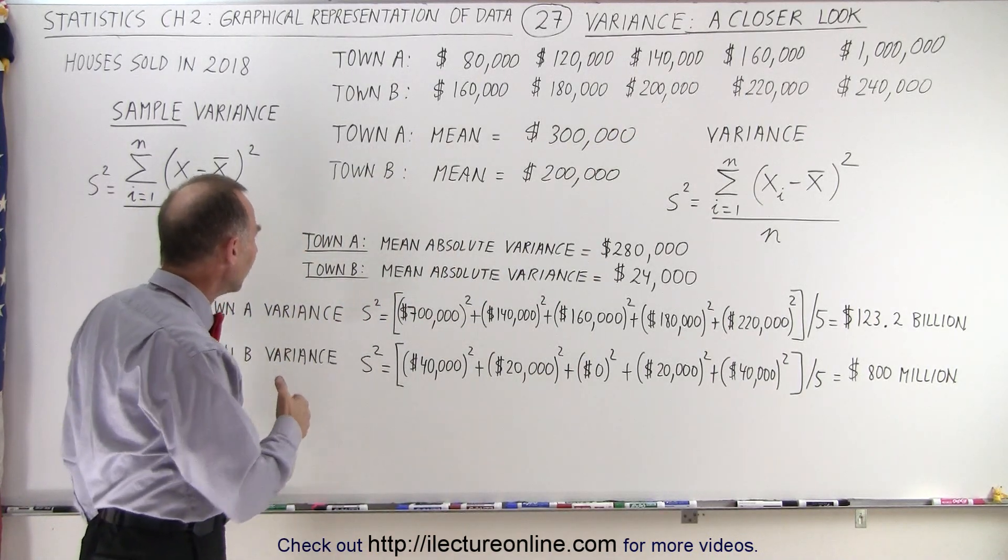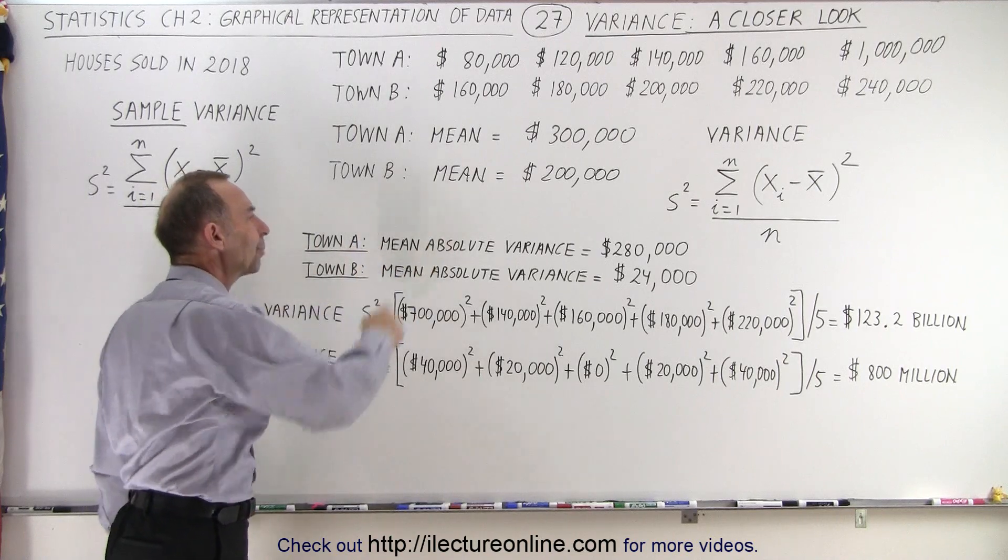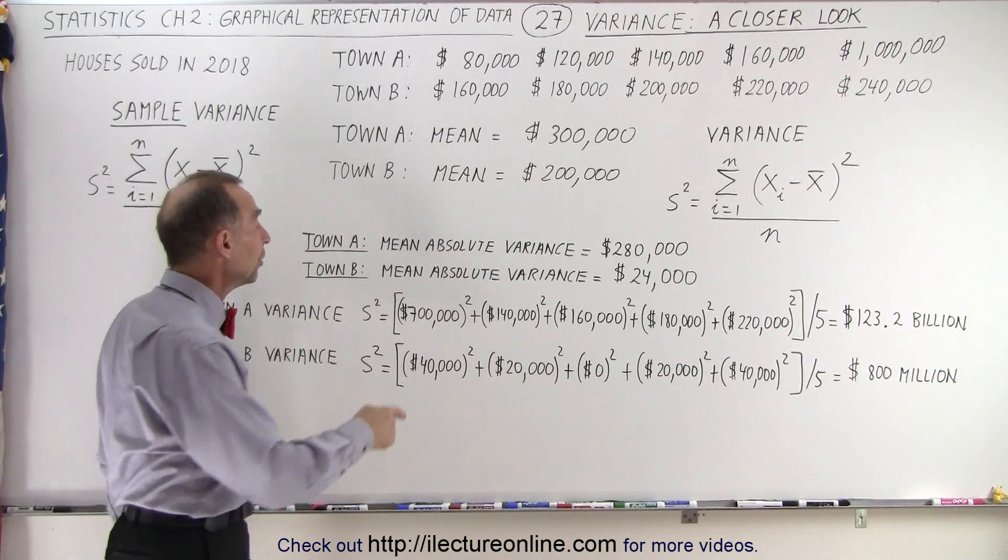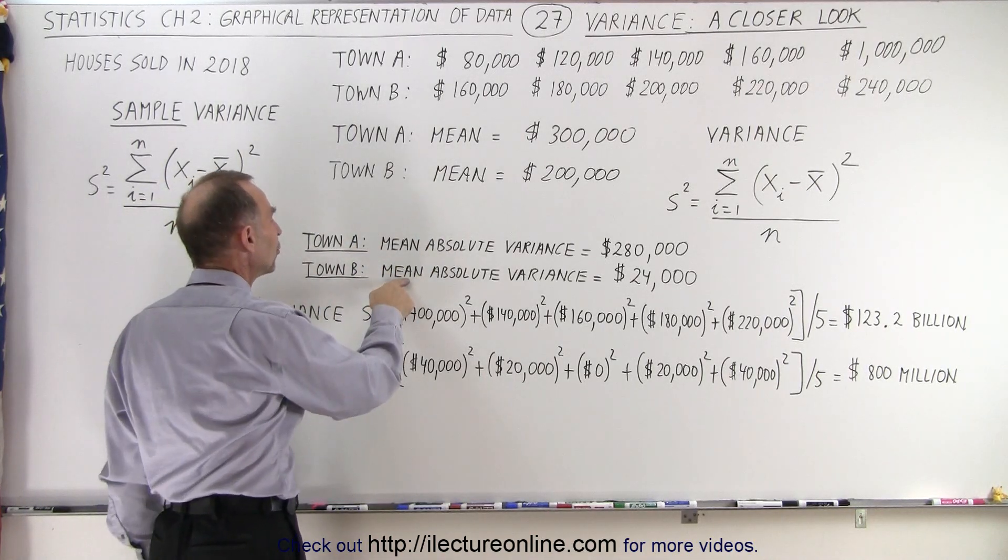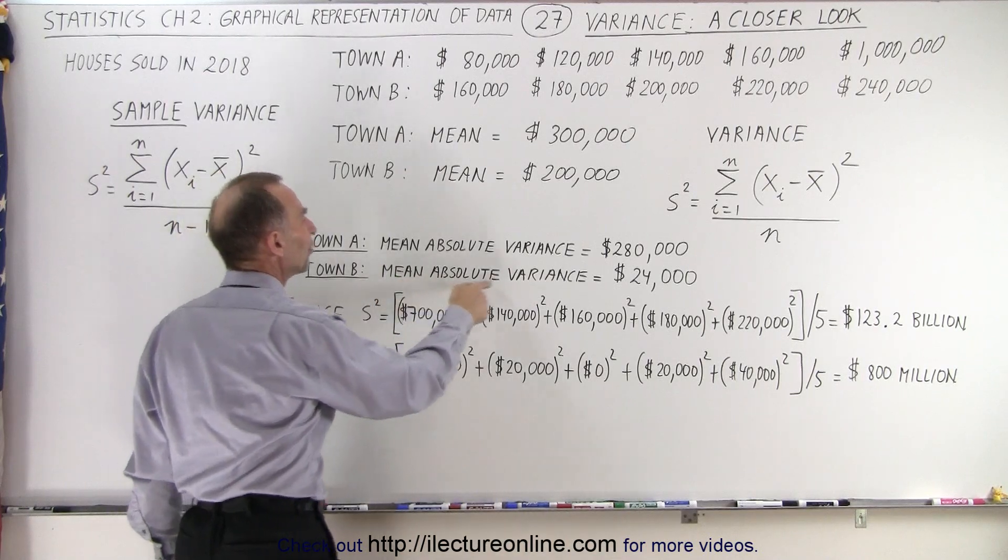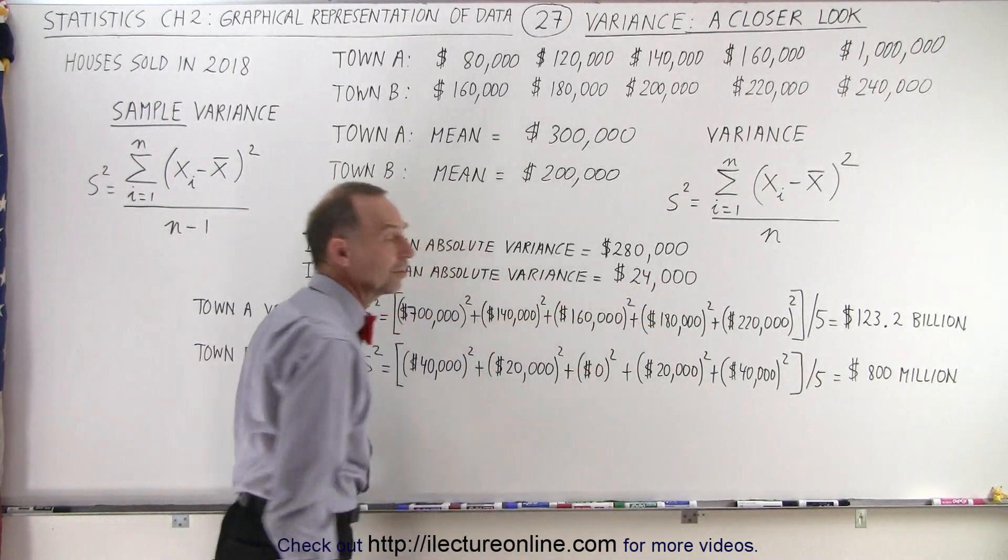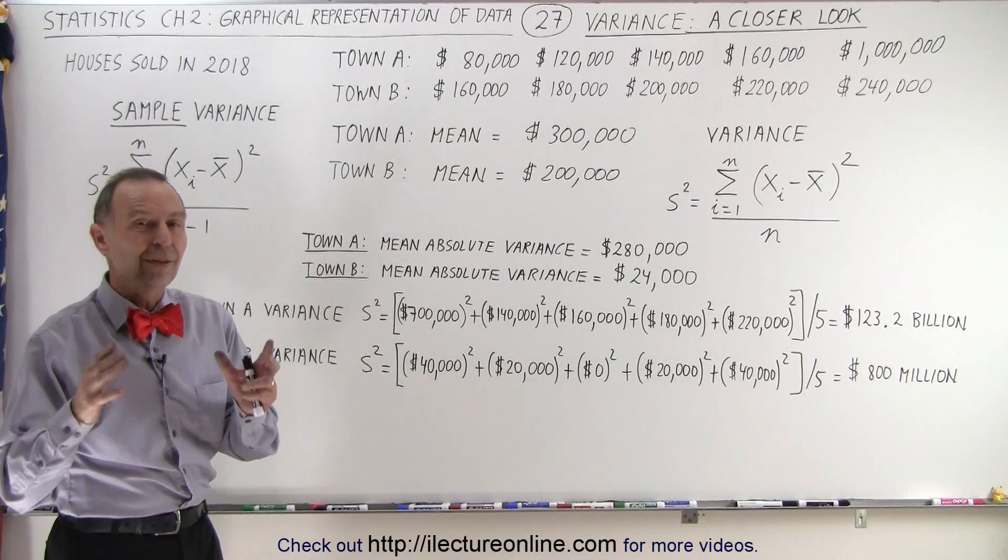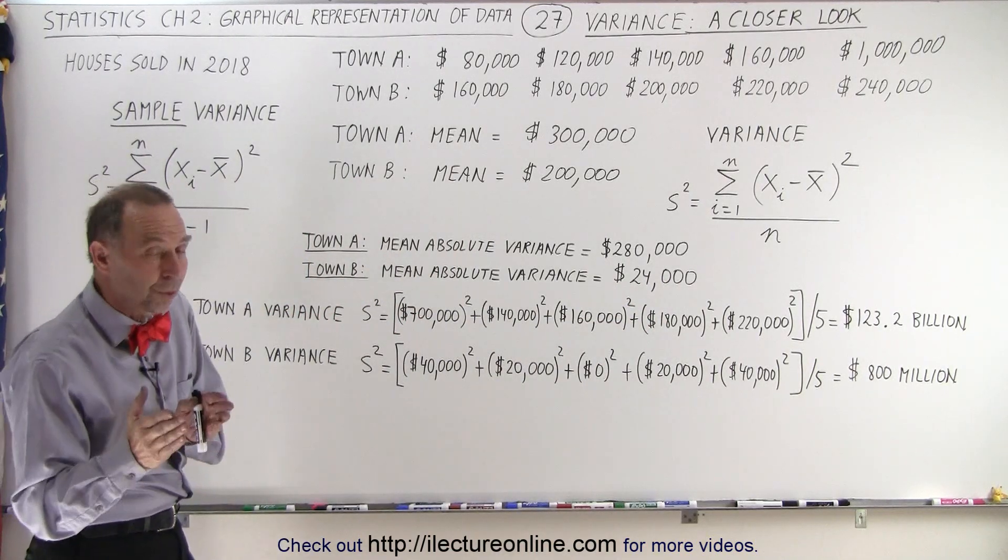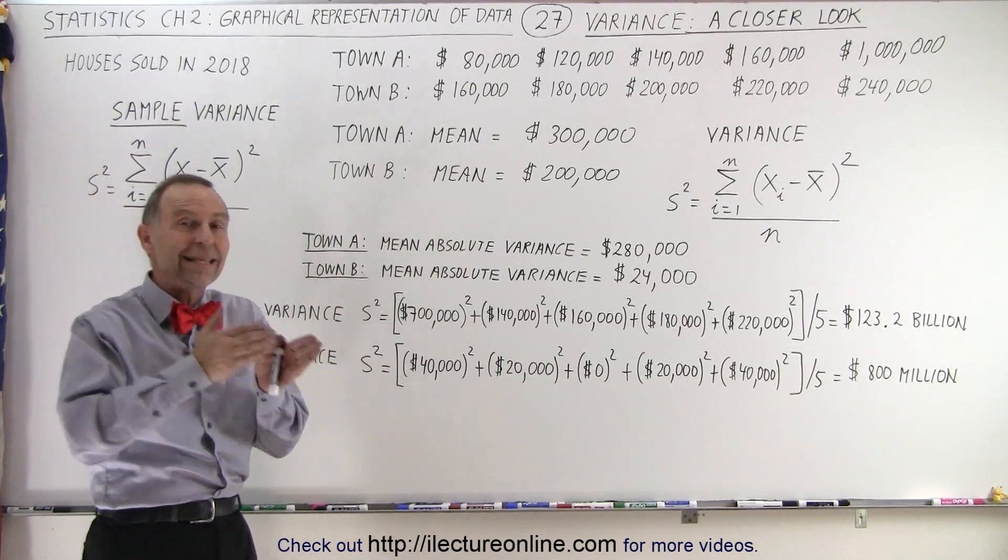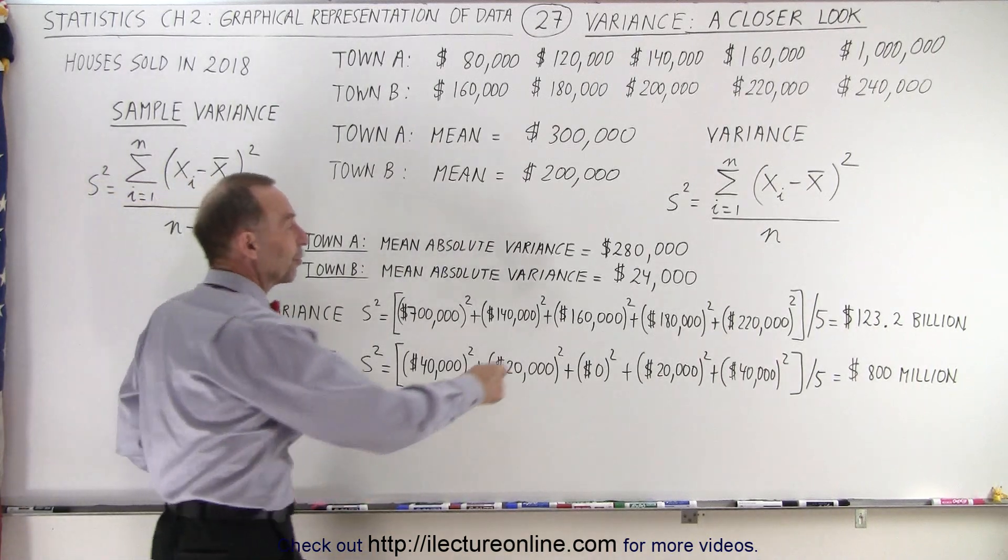Then we calculated for both towns the mean absolute variance. Now in the previous video, or two videos ago, we showed you how to calculate the mean absolute variance for town B and ended up being $24,000. In other words, the typical or average difference between the house price and the average house price was $24,000.